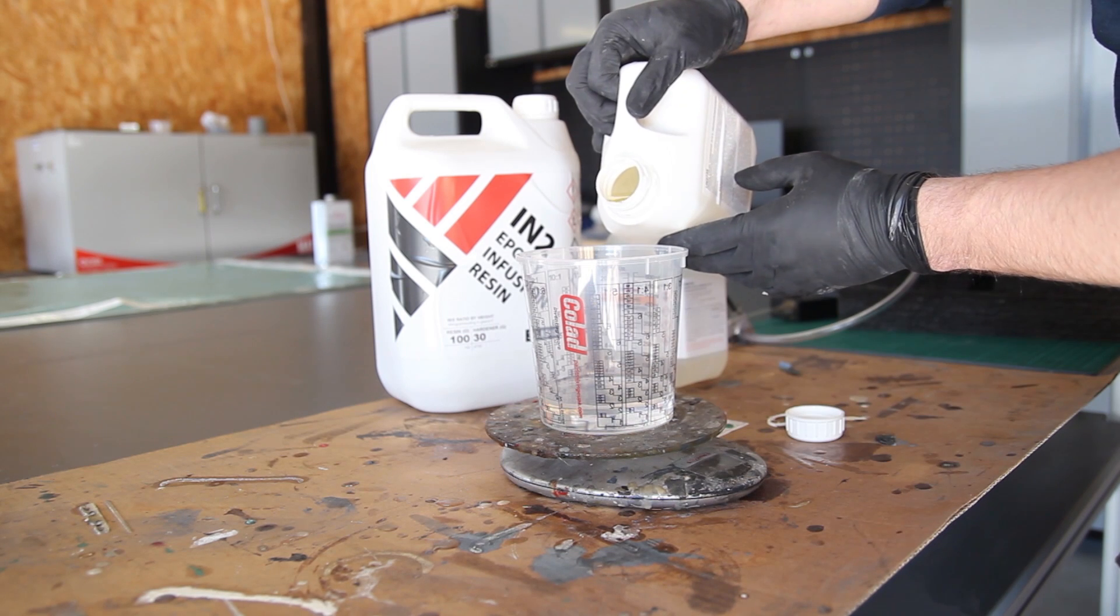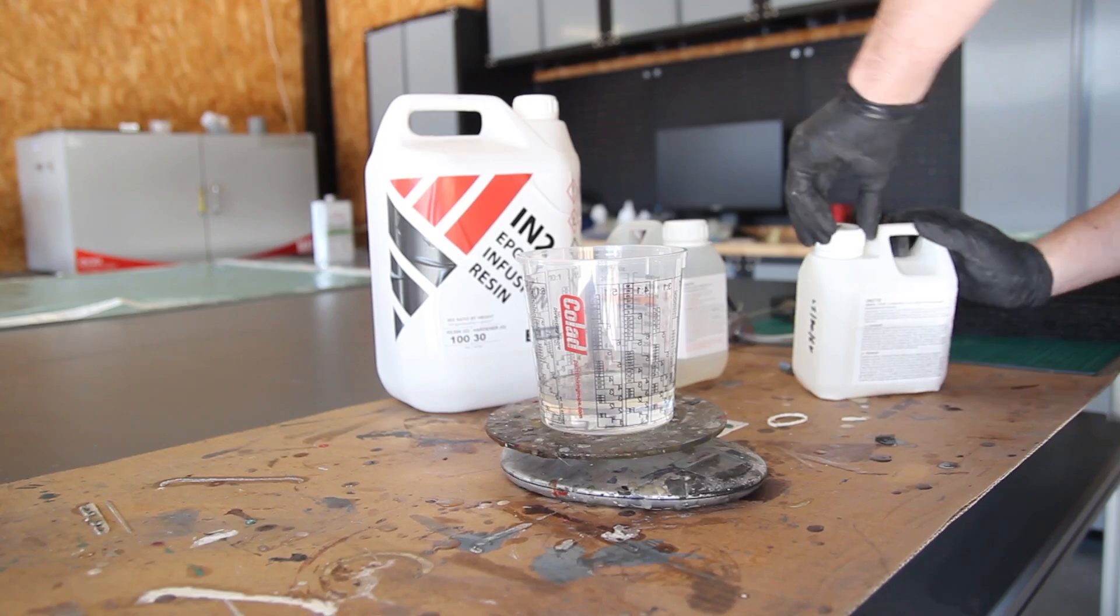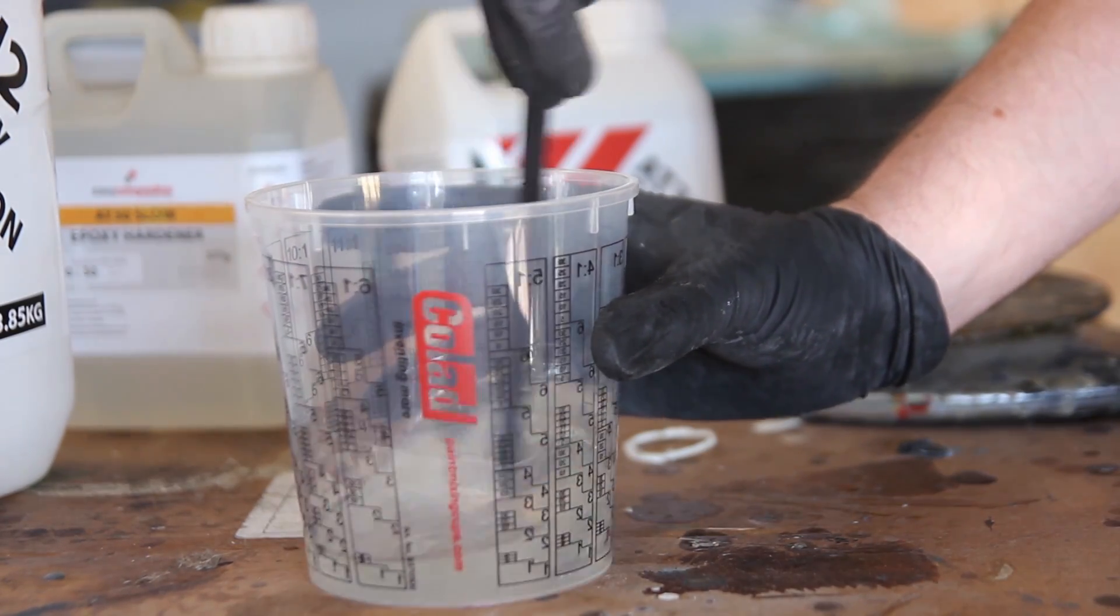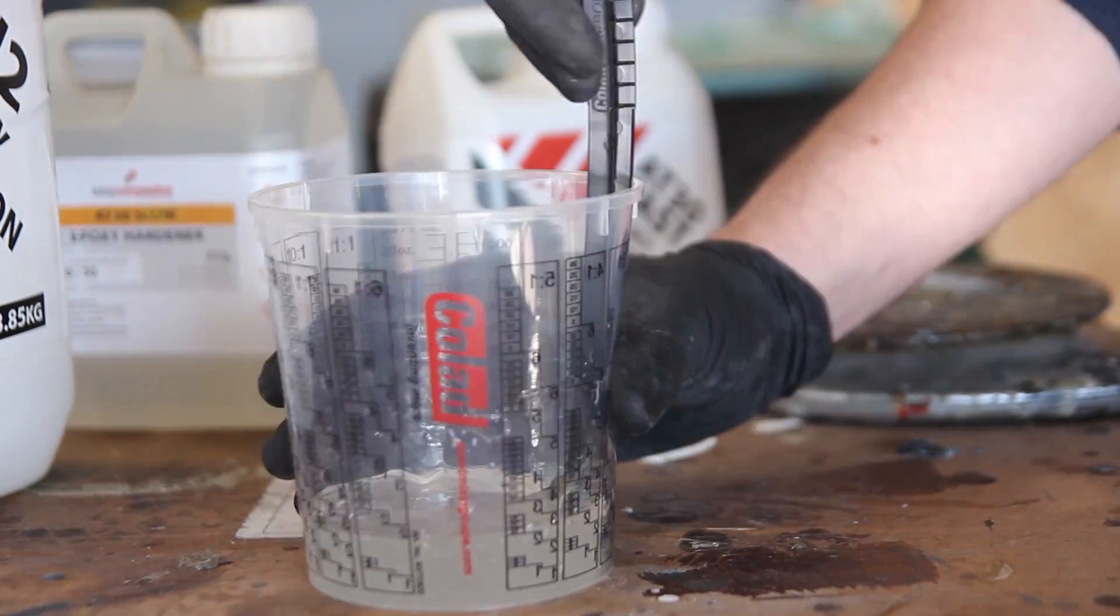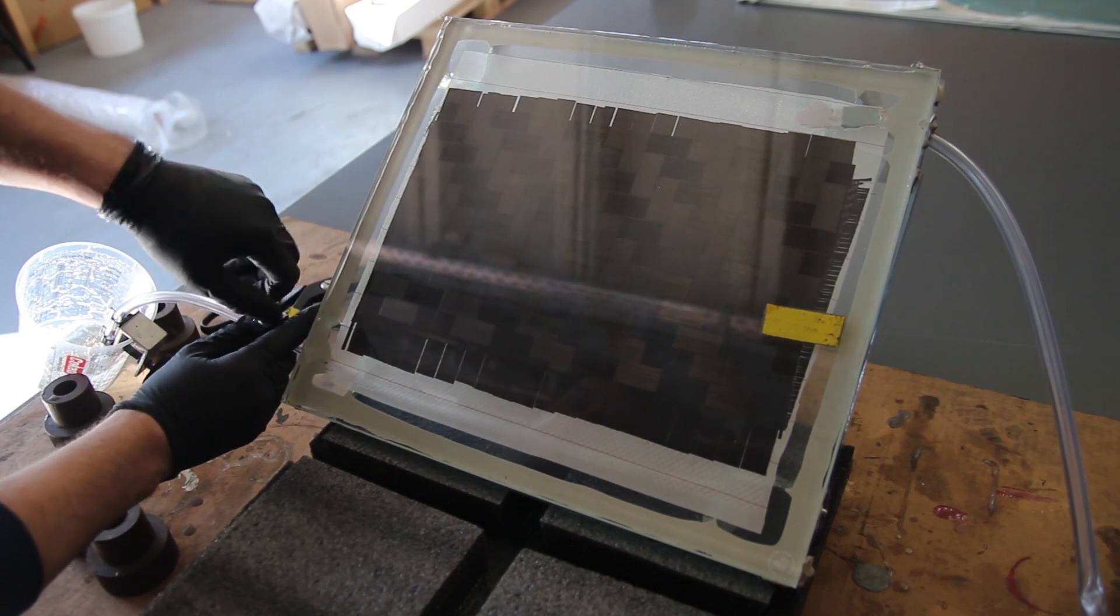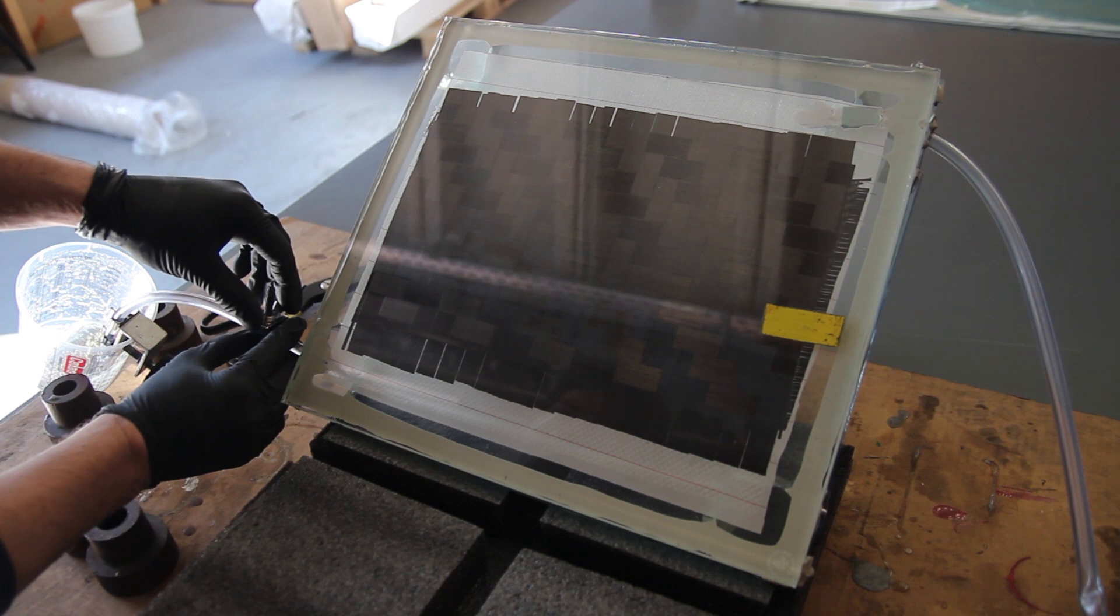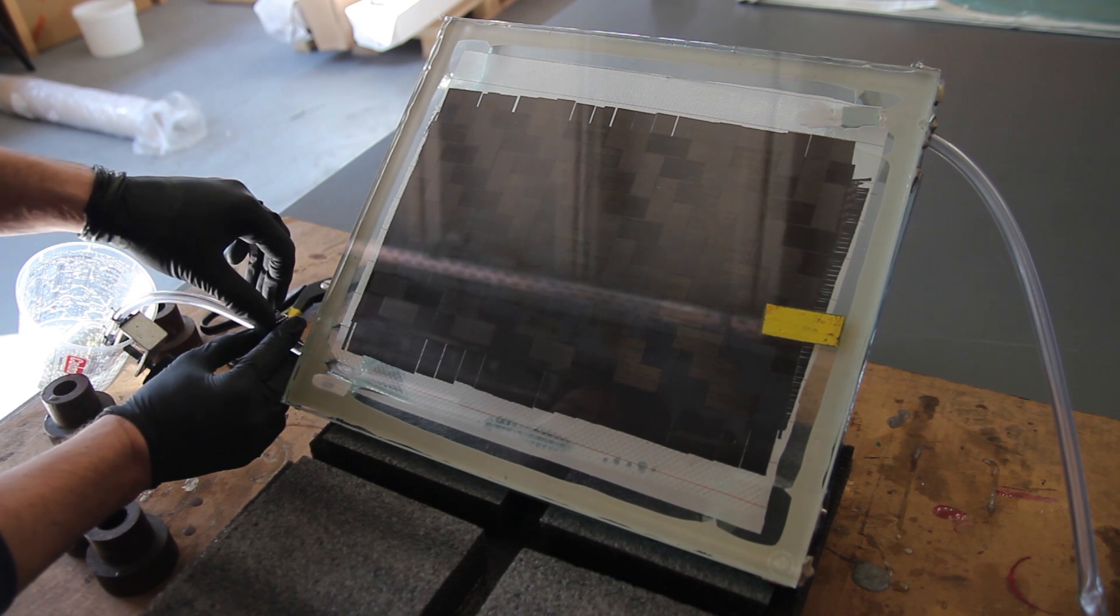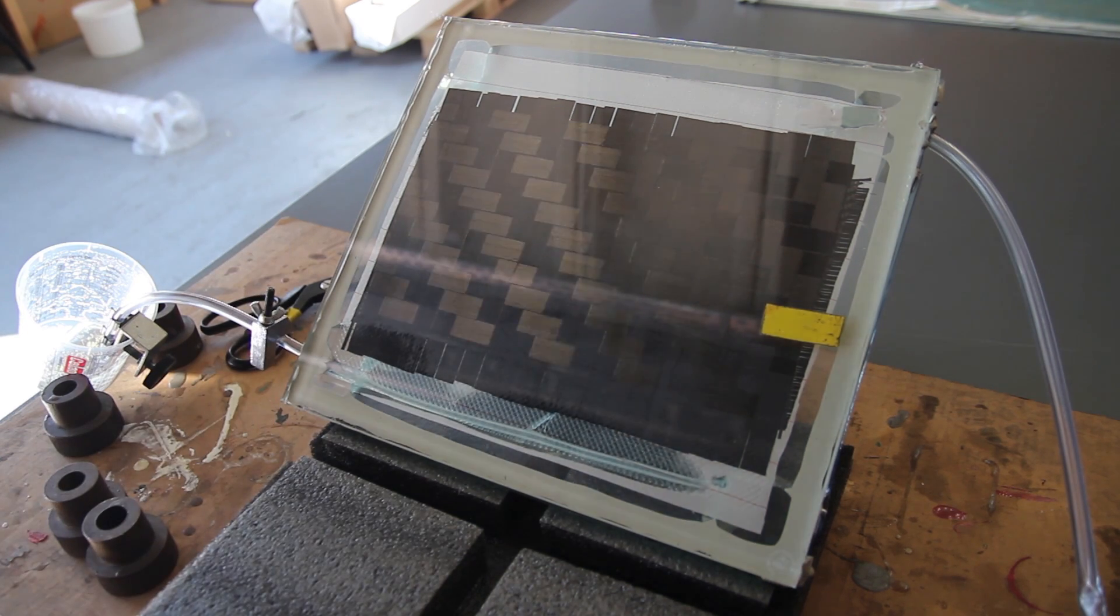So here we're preparing everything to do the resin infusion. I'm using the IN2 epoxy infusion resin from Easy Composites. And as you might or might not know, it's in the description of the products as well, you can mix fast and slow hardener to create your own speed of hardening and curing. The most difficult thing is finding a good balance between having it cure as fast as possible because you want to proceed with your project in a fast way, but avoid having it cure too early before the infusion is done.